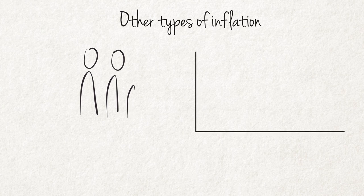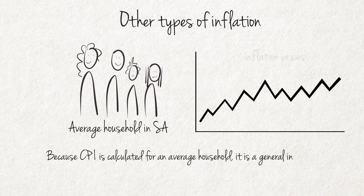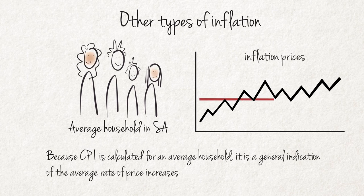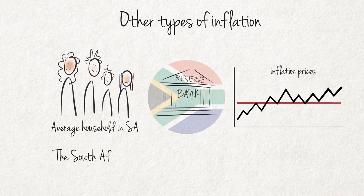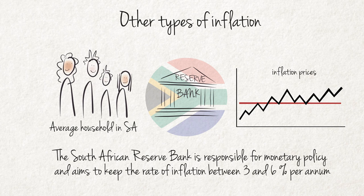Other types of inflation. Because CPI is calculated for an average household, it is a general indication of the average rate of price increases in the economy. This is also a major reason why the measure is used for monetary policy purposes. The South African Reserve Bank, the Central Bank, is responsible for monetary policy and aims to keep the rate of inflation between 3 and 6 percent per annum. Although this overall rate is the most important inflation rate, it is not the only one calculated and published.